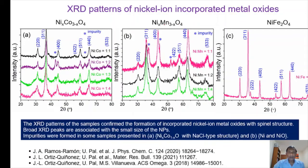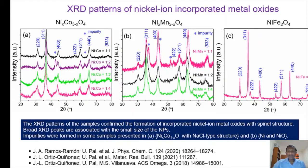In the case of nickel manganite, the same thing happens. For low nickel content — for example, nickel manganite ratio 1:4 — we got all spinel peaks corresponding to nickel manganite. When the nickel-to-manganite ratio is increased, we get slightly broadened peaks. However, when the nickel manganite ratio is 1:1, apart from the spinel peaks, we got several other peaks around 54°, 45°, and 37°, which are either nickel metal or nickel oxide.